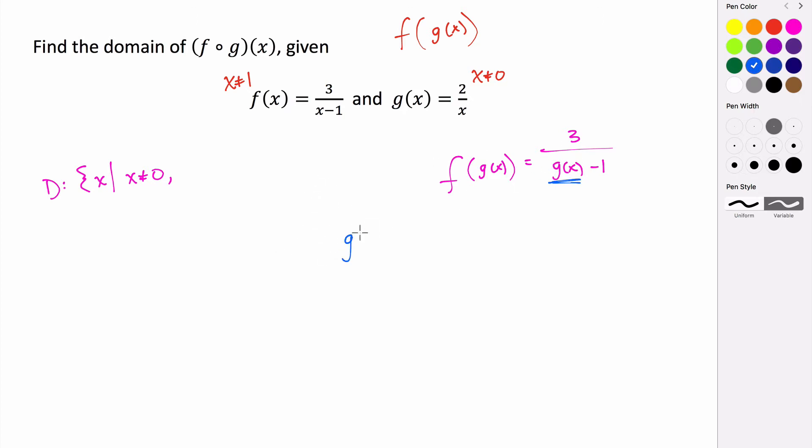So what makes g of x equal to 1? Let's figure it out. Set 2 over x equal to 1 and figure out what makes that true. We can multiply both sides by x, and that's going to give us 2 equals x. So if x is 2, we know that g of x would be 1.